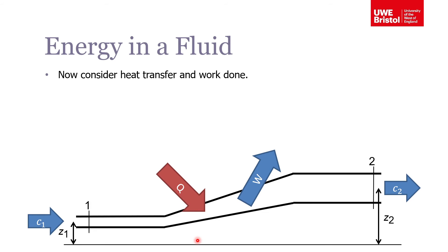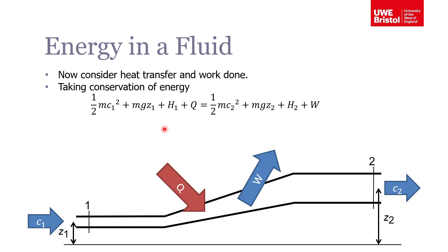That was just the conservation of energy for fluid flowing through a system or device. As mentioned earlier, normally with devices we have heat transferred — in the context of a cooler or heater — or work being done — in a compressor or turbine — or possibly a combination of both. So we now need to factor this into our energy balance, considering not only the conservation of energy in terms of the flowing fluid but also the heat transferred and the work done.